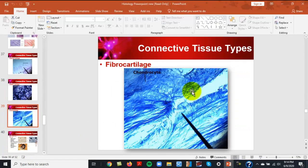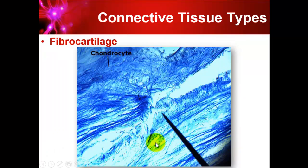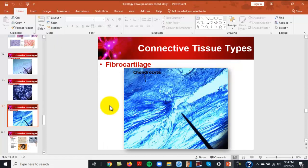In the fibrocartilage slide — shown at low power — you can see the large blue fibers and the nuclei of the cells. That is fibrocartilage.